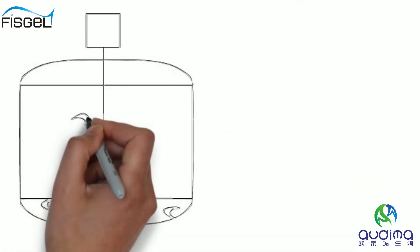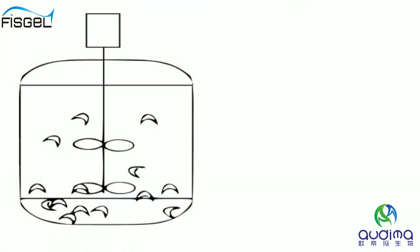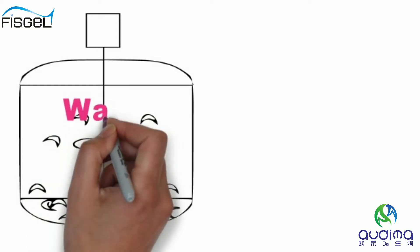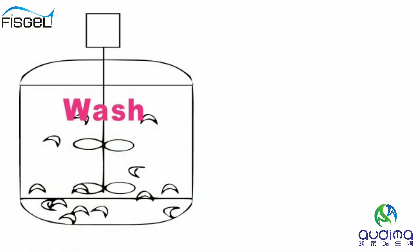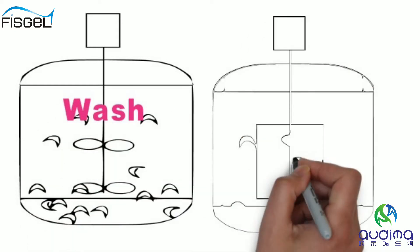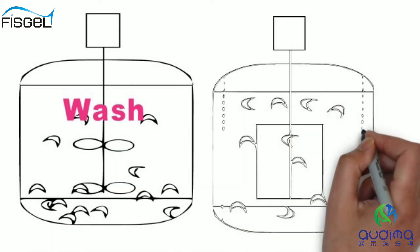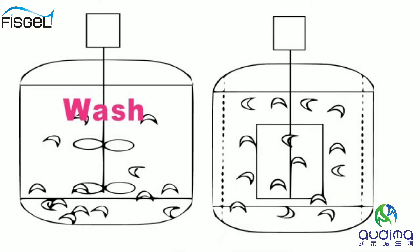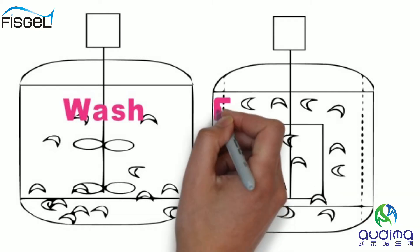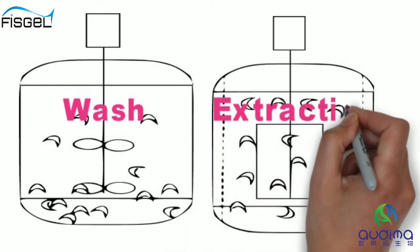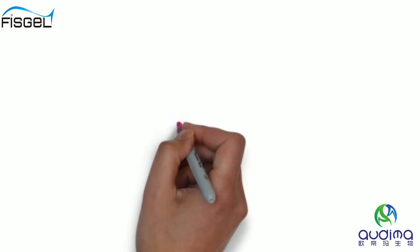We pre-treat scales and skins to remove impurities and fat. Then the gelatin liquid is extracted by hydrolysis. The next production process is to remove impurities in the gelatin solution, increase the concentration of the gelatin solution, and dry the gelatin.